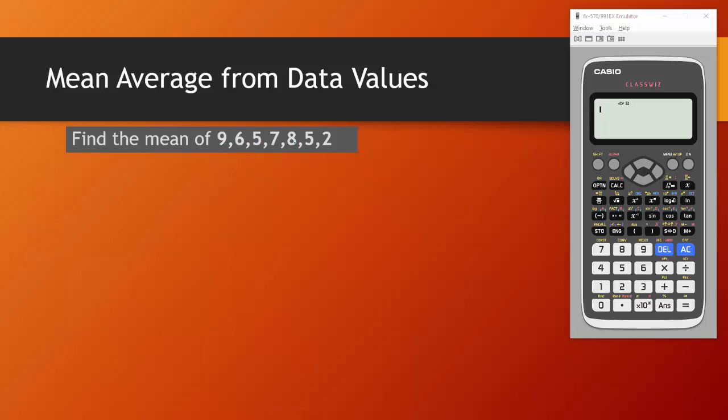So we want to find the mean of these values here: 9, 6, 5, 7, 8, 5 and 2. Now to find the mean you simply add up all the values and divide by the number of values. We can get our calculator to do this by following some steps.